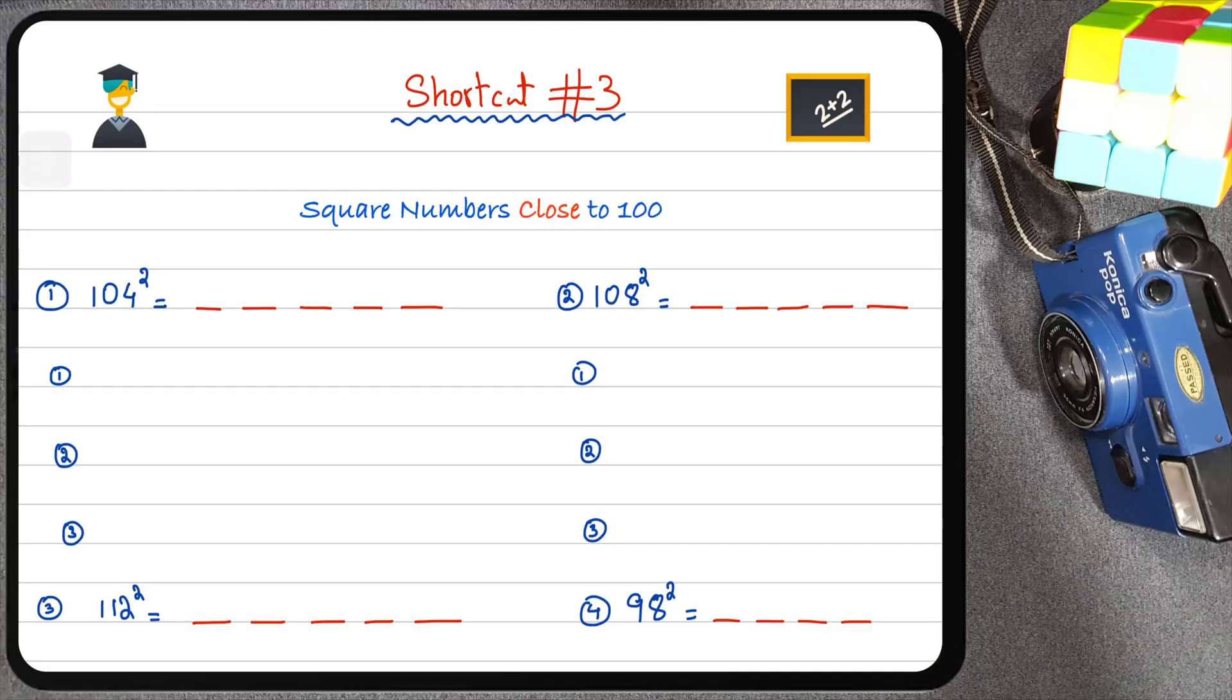In this video we're going to learn how to square numbers close to 100 in three simple steps. Here I have example one in which we're going to square 104. The first thing you want to do is remember that your base is 100, so find out how much greater 104 is than 100. The answer to that is 4, so I'm going to write 4 in step 1. In step 2 I'm going to take this 4 and add it to the original value, so I'm going to add 4 to 104. So 104 plus 4 equals 108.